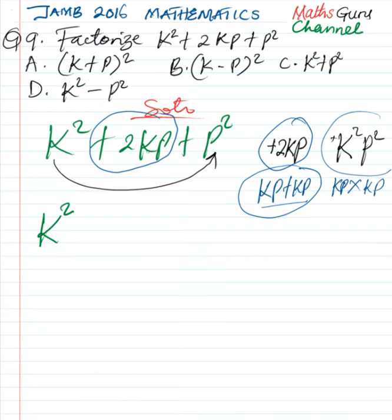So we are going to write the expression as k square, instead of writing 2kp now, we are going to bring in plus kp plus kp. Then we write our final expression here, p square.